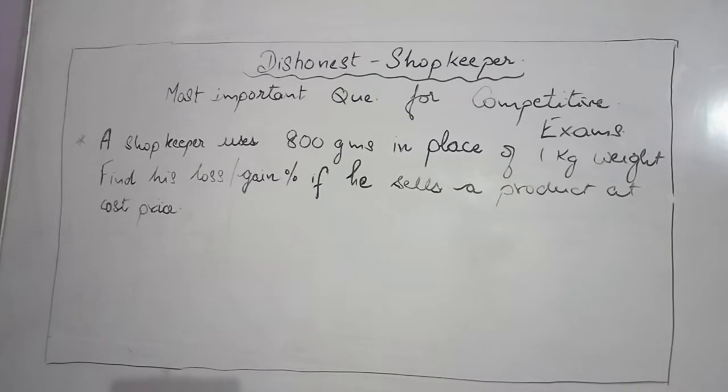A shopkeeper uses 800 grams in place of one kilogram weight. Find his loss or gain percentage if he sells a product at the cost price. So cost price means the price at which he bought it, but he has changed the weight.